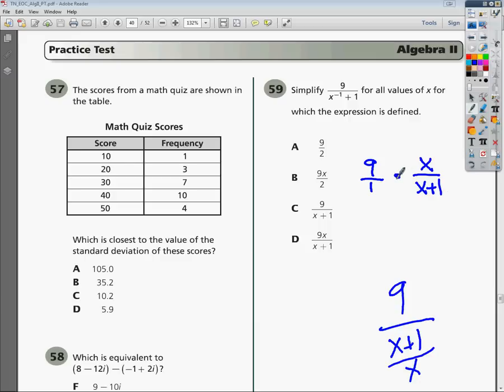From here, it's pretty simple. You just do 9 times x, which you just have them touch to show it's multiply. And 1 times x plus 1 is just x plus 1.